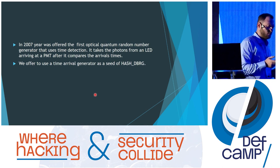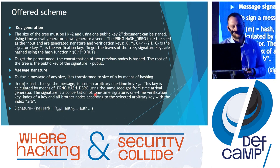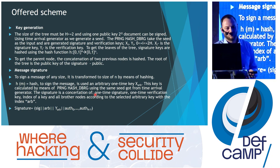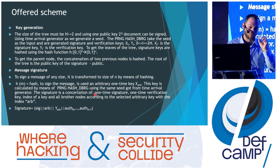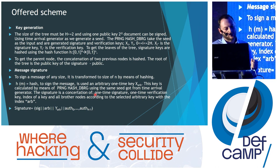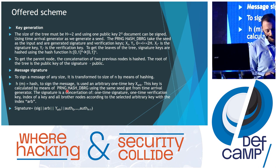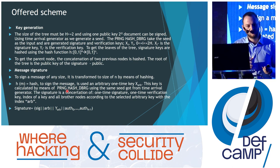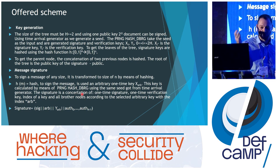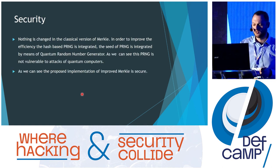We propose to use a time-of-arrival quantum random number generator as a seed for the Hash-DRBG. Here is the schema: in the key generation phase, we don't generate all the signature keys directly. Instead, we take one quantum seed, pass it to the DRBG, and afterwards get all the signature keys. All other processes remain the same. In the signing phase we need the signature keys again, so we take the same seed from the quantum random number generator, pass it through Hash-DRBG, and obtain all the signature keys.